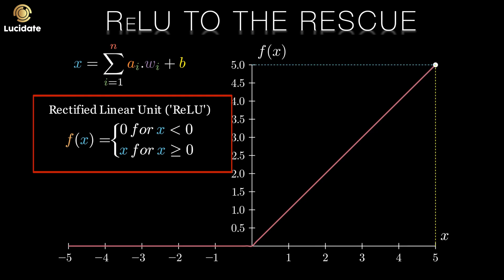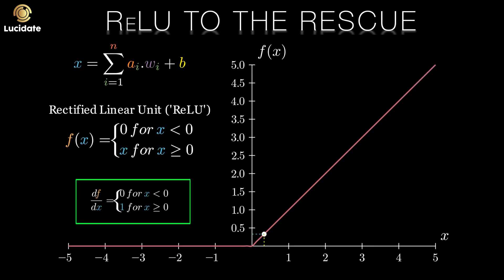The derivative is easy to compute as well. It's either one or zero. It's one if the input is greater than zero and zero otherwise. This very simple derivative really speeds up training. These factors have made this type of activation function the most popular for large scale networks and computer vision tasks in particular.